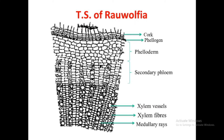The secondary phloem contains sieve tubes, phloem parenchyma, starch grains as well as calcium oxalate crystals. So calcium oxalate crystals and starch grains are present in both phelloderm as well as in secondary phloem. The third zone is secondary xylem which contains xylem vessels, xylem fibers and medullary rays.